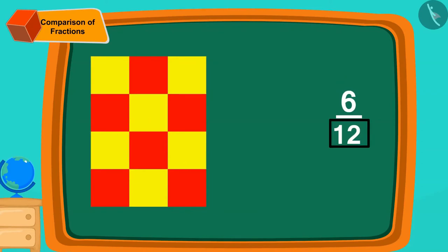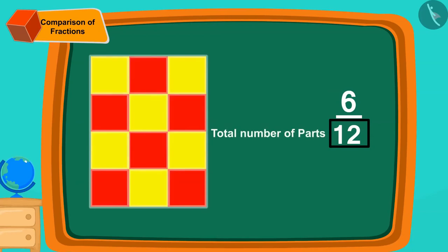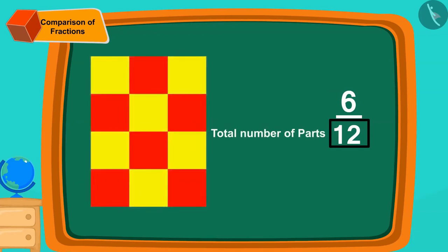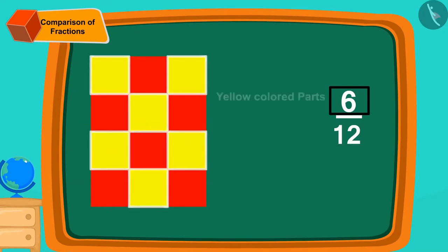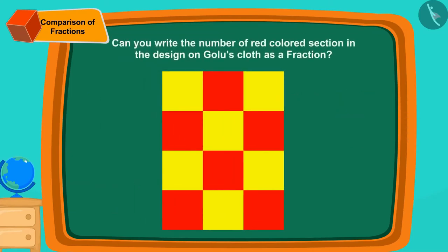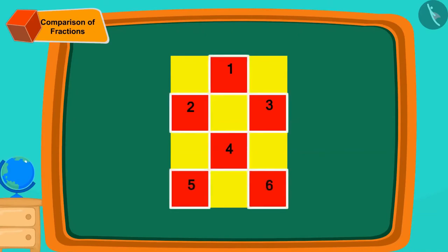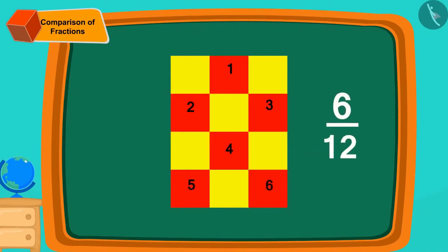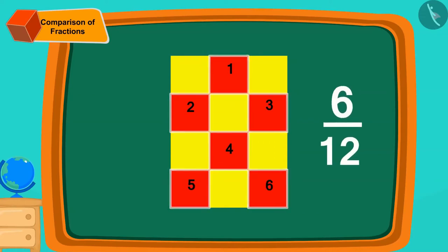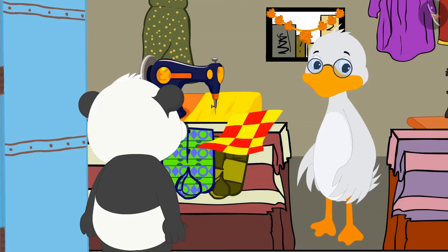Children, you remember right? The number twelve tells us that our total cloth is divided into twelve equal parts and six tells us how many parts are yellow. Can you write the number of red colored sections in the design as a fraction? The red colored section is also six twelfths of the design.